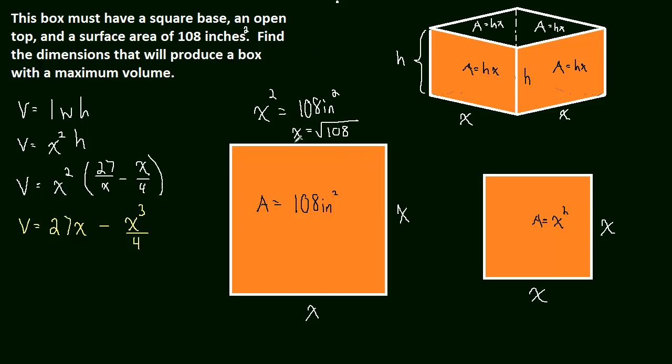If you let the base take up the entire surface area, there will be no height. But that's important to know. So we know that at most, x is going to be the square root of 108. I'm running out of time. We'll continue figuring out the domain in the next video and then solve the problem. See you then.